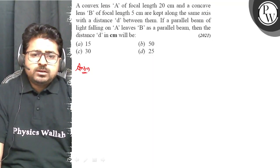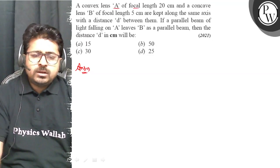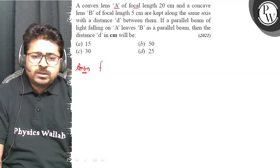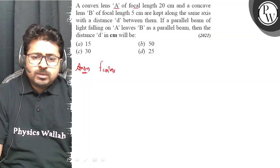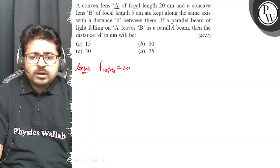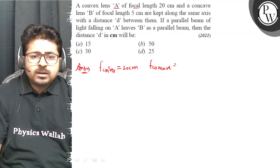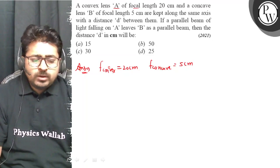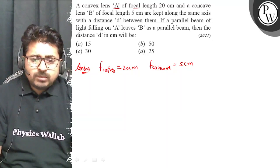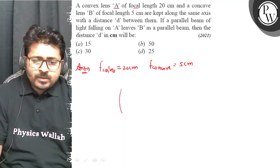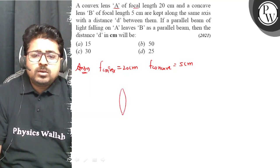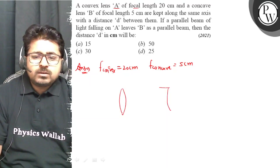The focal length of convex lens A is 20 cm and focal length of concave lens B is 5 cm. They are placed a distance D apart. Let me draw a diagram — this is the convex lens and this is the concave lens.